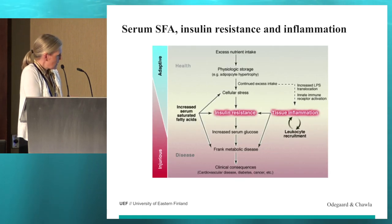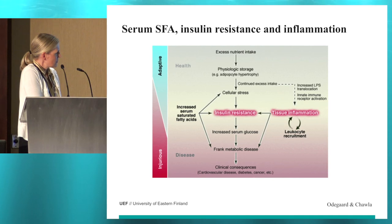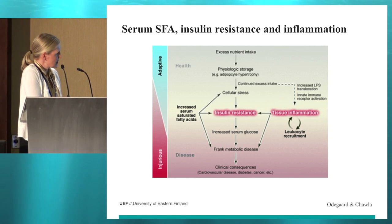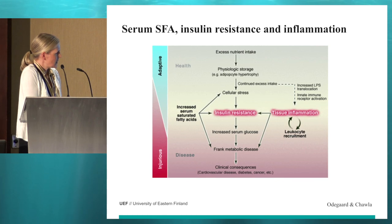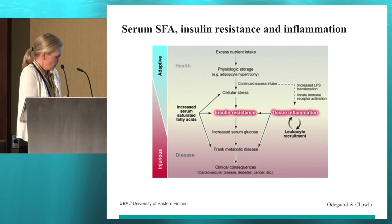Odegaard and Chawla have presented a summary that increased proportion of saturated fatty acids in serum causes cellular stress, which is associated with insulin resistance. There also seems to be a direct effect on insulin resistance as tissue inflammation, and via increased serum glucose concentration, there will be frank metabolic diseases and clinical consequences. So inflammation is very important behind hyperglycemia and impaired glucose metabolism, and serum saturated fatty acids seem to be one big issue behind this phenomenon.